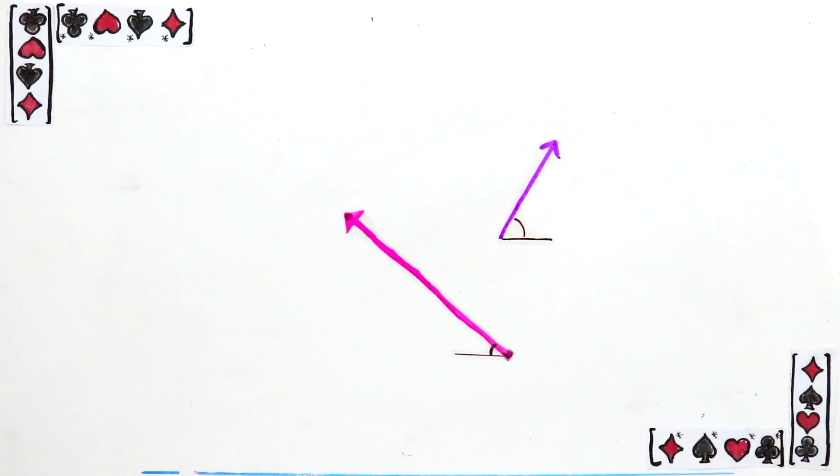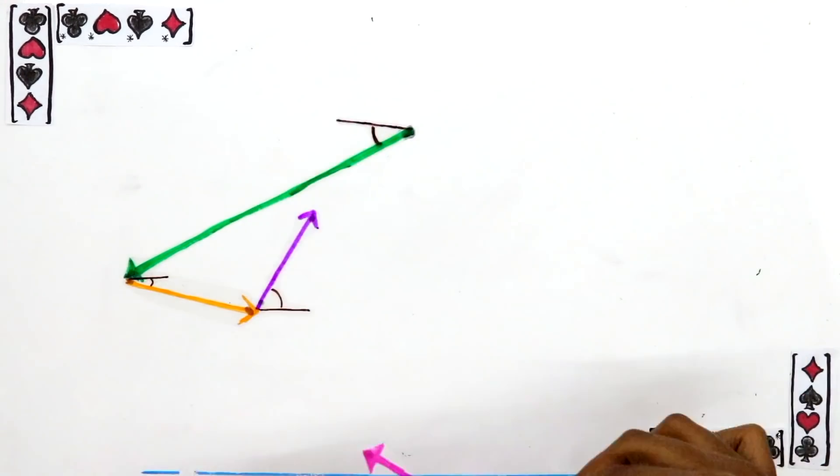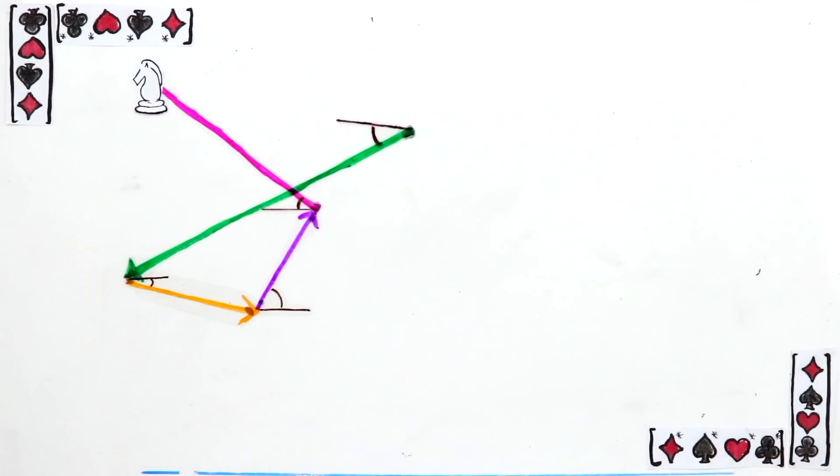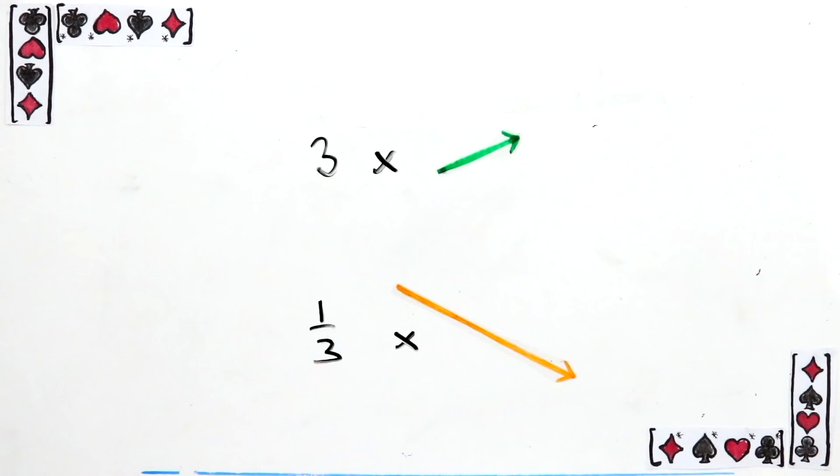Anyway, now that we understand how to add two vectors, we understand how to add as many as we like. But adding together isn't all that vectors can do. They can also get multiplied by a number. And there's a simple way to think of this too. This just stretches or squeezes the length of the vector without changing the direction.